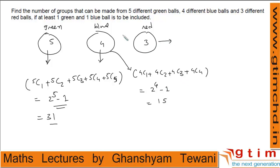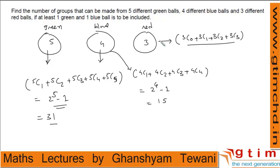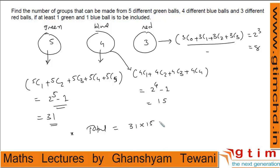For red balls, there is no condition, so selection starts from 0: 3C0 + 3C1 + 3C2 + 3C3, which equals 2 power 3 = 8. The total number of all possible combinations is 31 × 15 × 8.